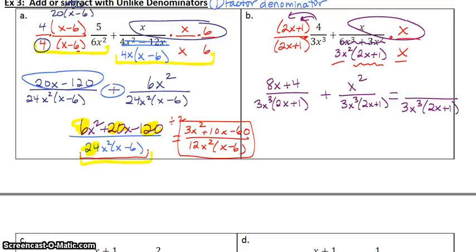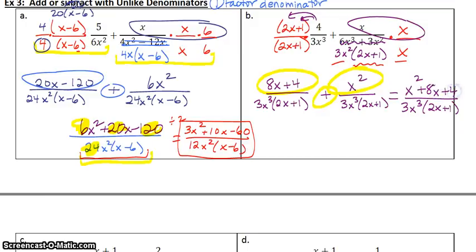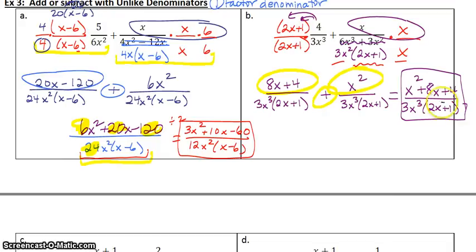Then I add the top, combining like terms if possible. I'm adding because it has a plus sign. This time there's nothing that can match, so x squared plus 8x plus 4 on top. For our purposes, we're going to stop here. Sometimes some book problems might, after this step, factor and try to cancel — we're not making you do that for this class. Once you get to this step, you can be done.